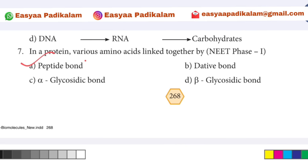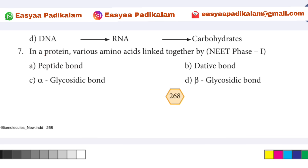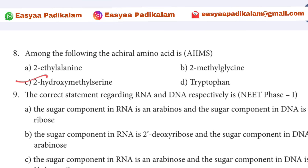Various amino acids are linked by peptide bonds (tide). Among the following, achiral amino acids — option A is achiral.